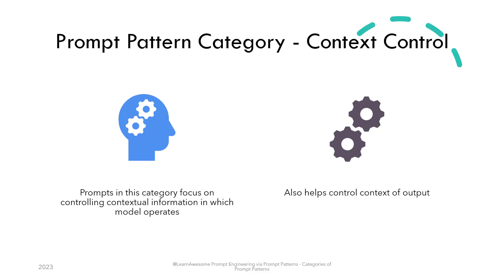Context control category focuses on controlling the contextual information in which the model operates, and also alters the context of output. For example, if you want to know about airplanes used in World War II, you can instruct it to leave the details of passenger aircraft out of its response.